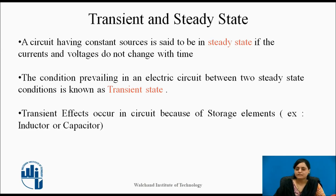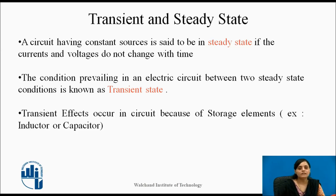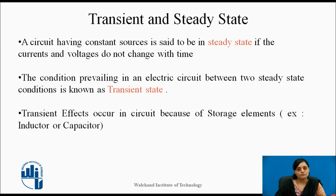Why are the corresponding effects more severe in cases of DC sources? The transient effects are more severe in cases of DC sources because the corresponding frequency of any DC source is zero, while AC sources have corresponding frequencies. So the effects are more severe in cases of DC sources.